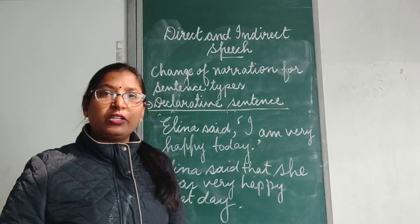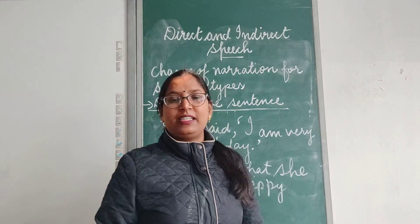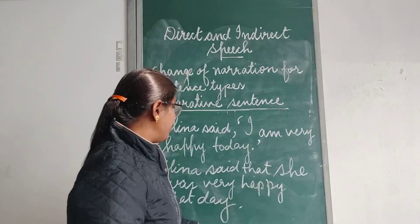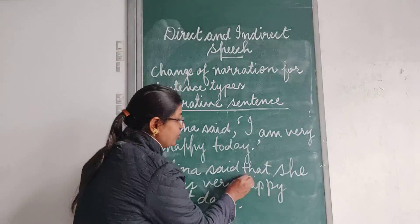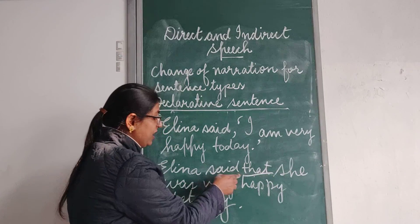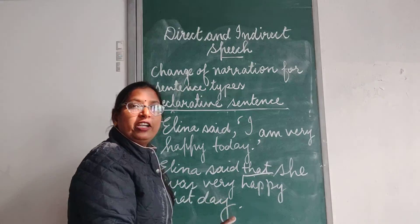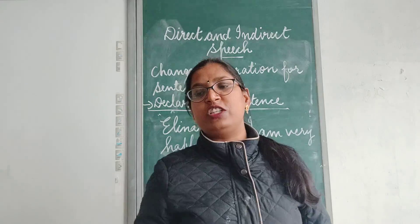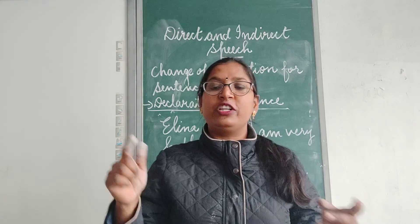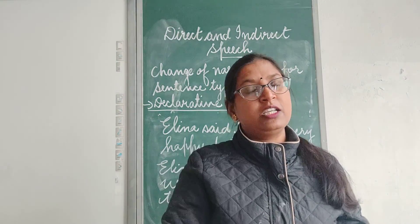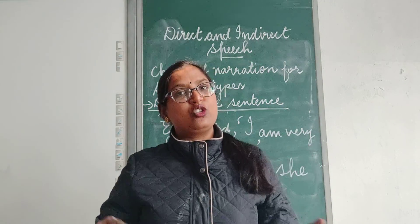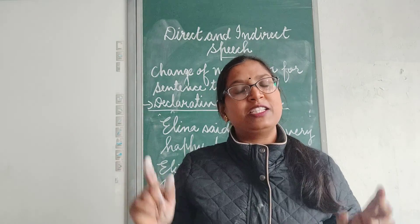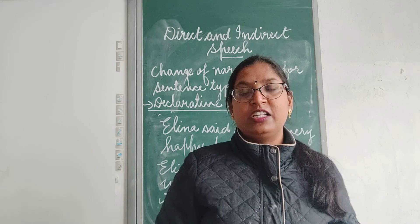The third rule is that conjunction 'that' is used to join the introducing verb and the quoted speech. In declarative sentences, conjunction 'that' is used to join the main sentence with the quoted speech. The tenses, personal pronouns, and words indicating time, place, and positions are changed according to the rules we have discussed previously. Changing pronouns, changing tenses, and changing the adverbials will remain the same as we have already discussed.